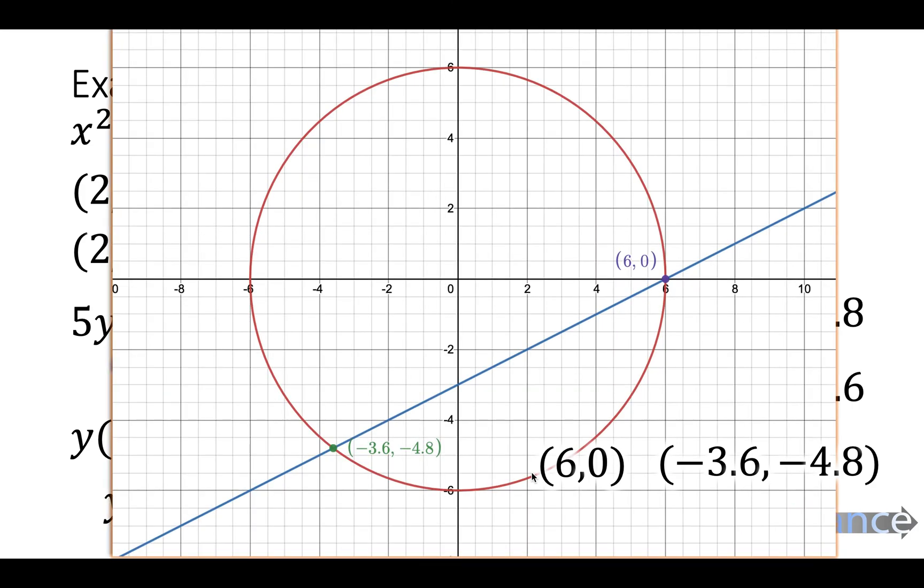Now let's just have a look at the graph of this. And as you can see I've graphed these two equations here. And they cross over at the exact points that we said they would. 6, 0 and minus 3.6 and minus 4.8. Which is really nice to see. And that's it. That is solving quadratic simultaneous equations.